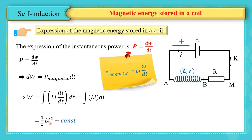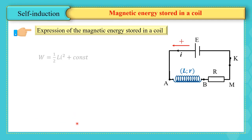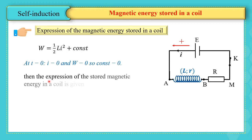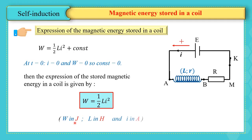Since L is constant and the integral of i di is i²/2, we obtain W = ½Li² + C. The constant is determined from initial conditions: at t = 0, i = 0 and W = 0, so C = 0. Therefore, the magnetic energy stored in a coil is W = ½Li², where the unit is joules, L is in henries, and i is in amperes.